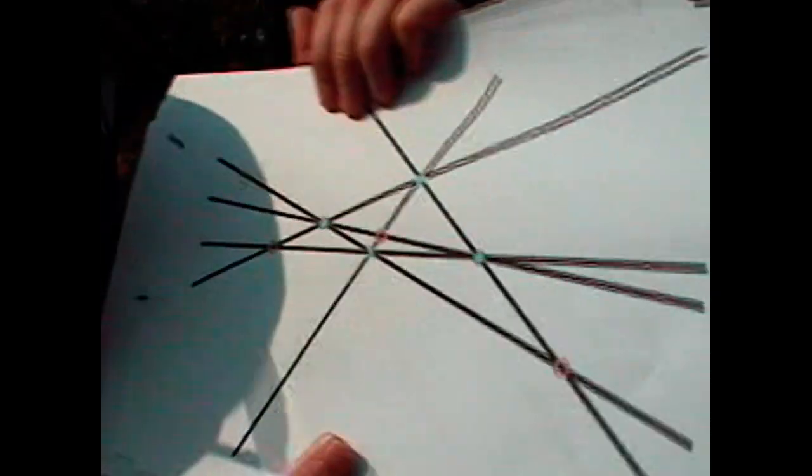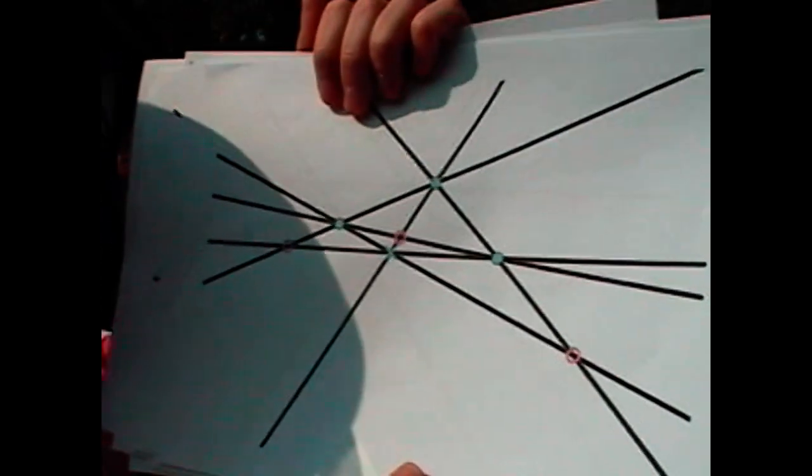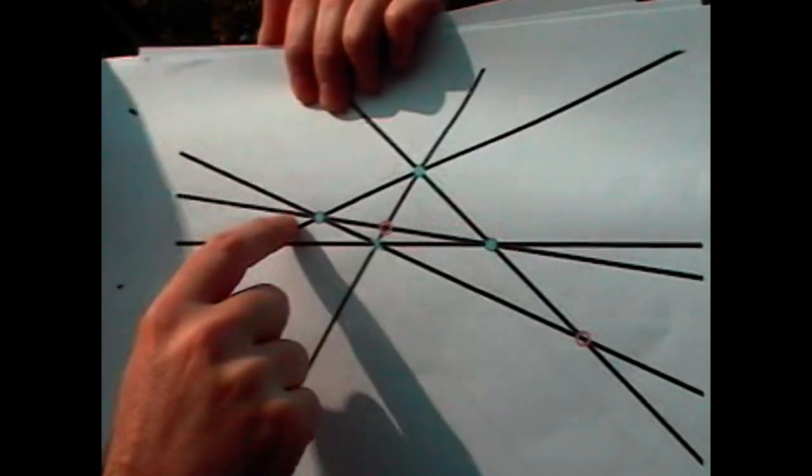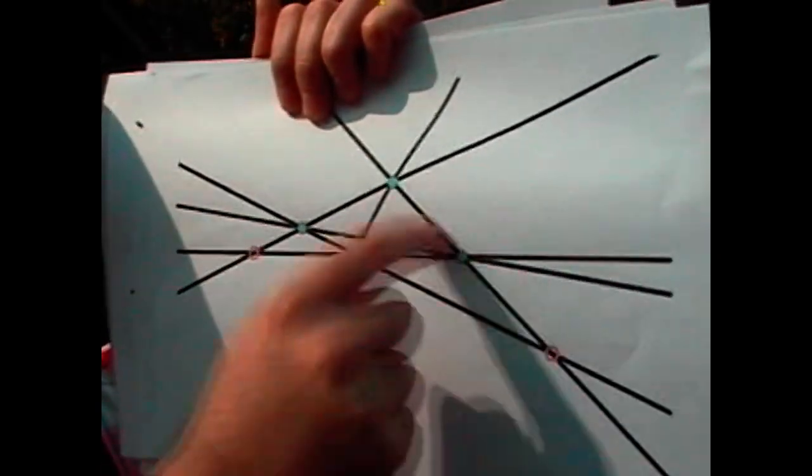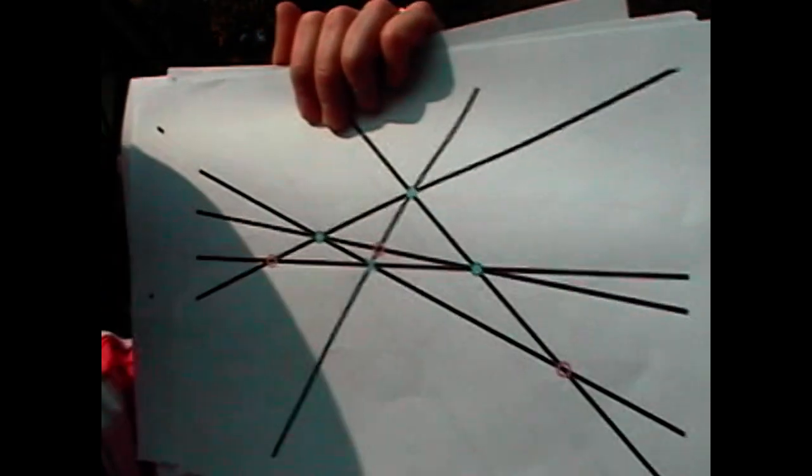You have also 7 dots and 6 lines running through those 6 triplets of aligned dots. Here, 1, 2, 3, 4, 5, and 6.